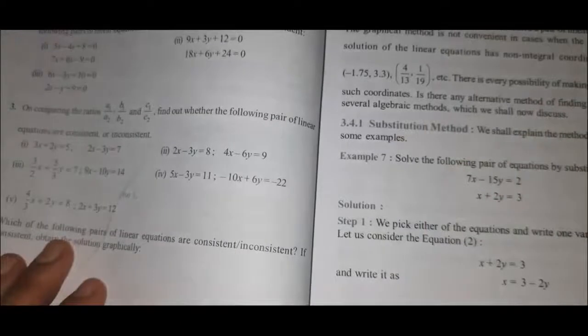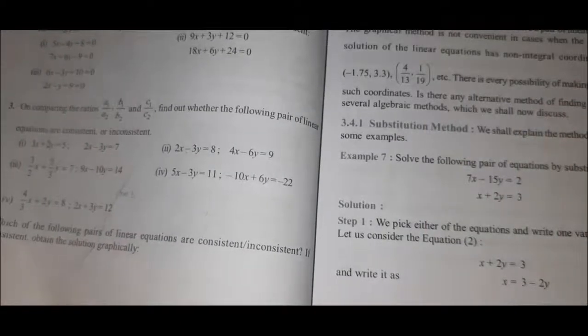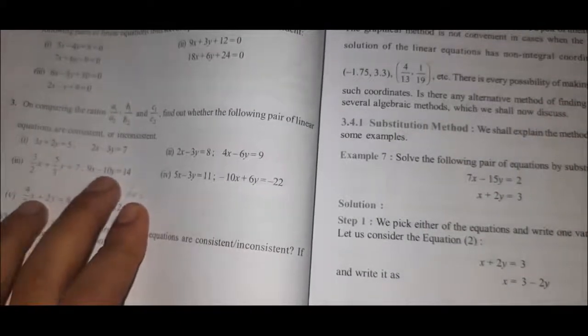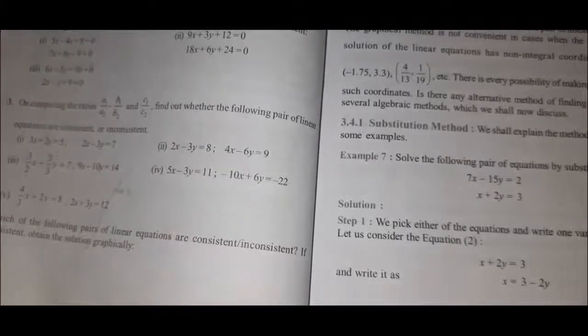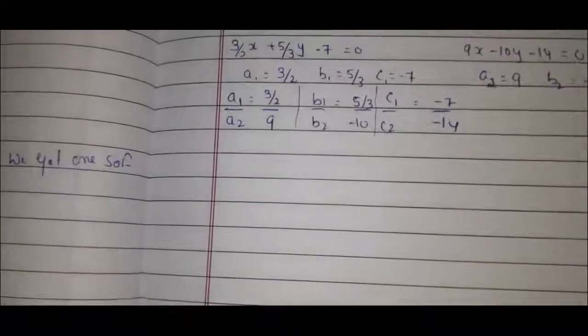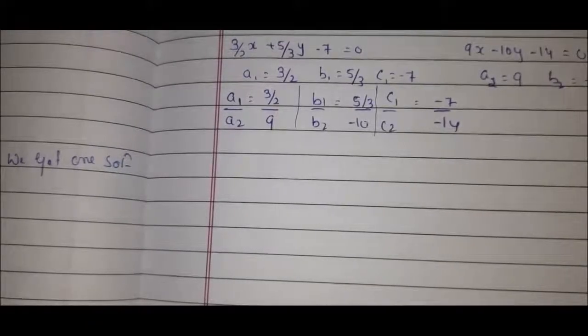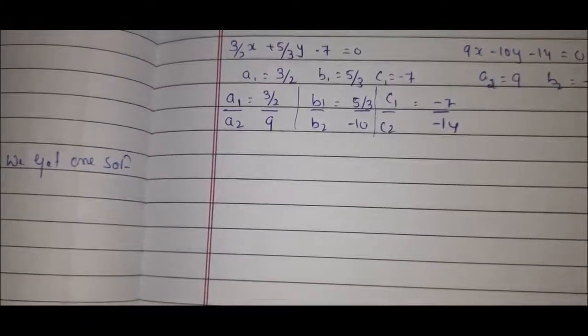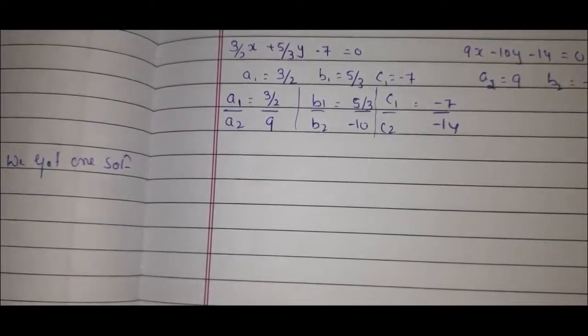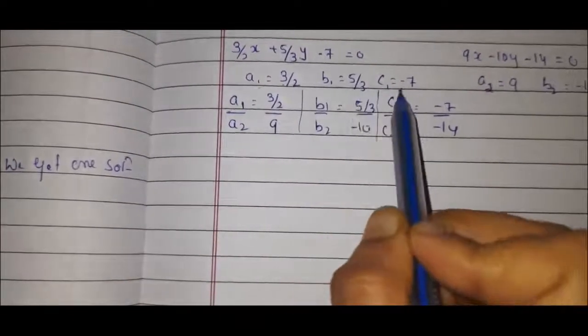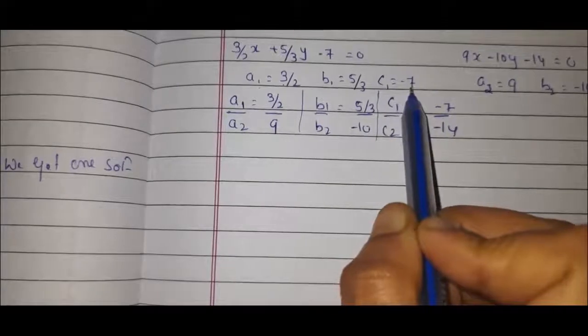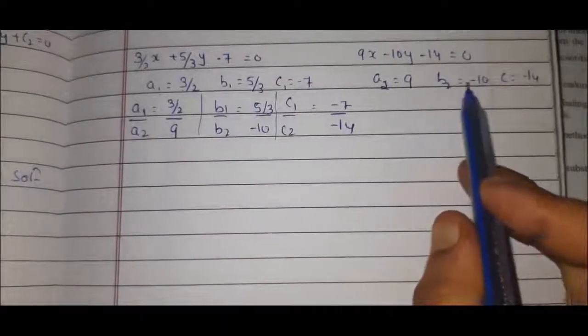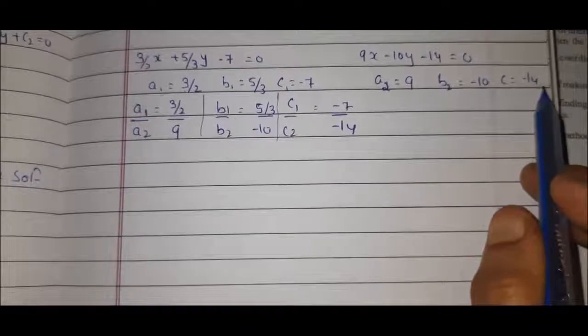Third question: (3/2)x plus (5/3)y equals 7, and 9x minus 10y equals 14. Comparing with the standard form: A1 is 3/2, B1 is 5/3, C1 is minus 7. And A2 is 9, B2 is minus 10, C2 is minus 14.